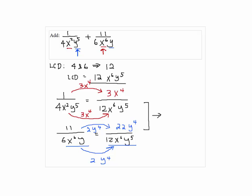Now, we are going to add the numerators so we have 3x to the 4th power plus 22y to the 4th power over 12x to the 6 y 5th. This is the answer.